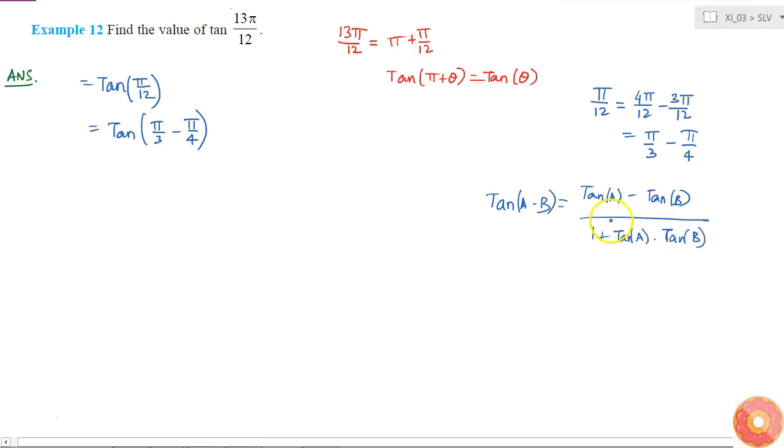This trigonometric identity is always valid unless A minus B is equal to π by 2 or 3π by 2 or something of that form. Here A minus B is not π by 2 or something, so I can apply this formula.